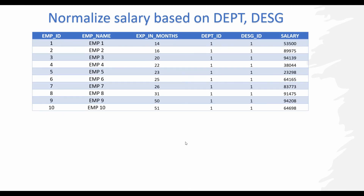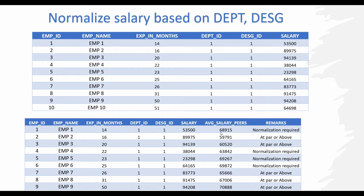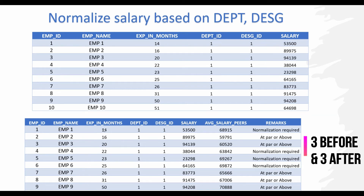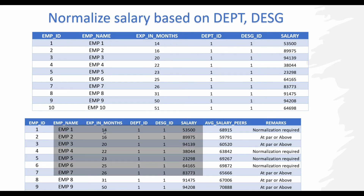For the next one, we have to normalize the salary of employees based on their department, designation, and experience. Every employee will be compared with other employees from the same department and designation who have experience close to them. You have to calculate the average salary based on designation and department, but should consider only 6 employees immediately closest to the person in terms of experience. For example, for employee 4, you should take the average salary from employee 1 to employee 7 because they are closest to employee 4 in terms of experience. Similarly for employee 5, you should take the average of those employees.